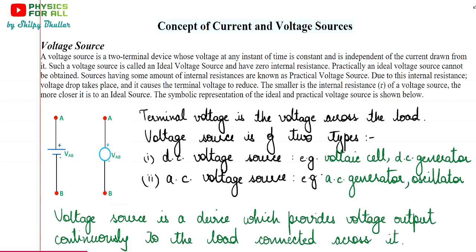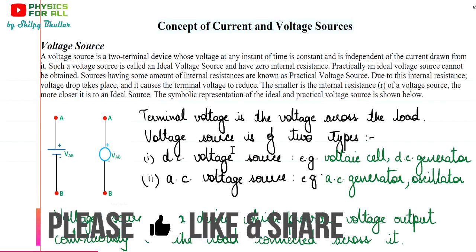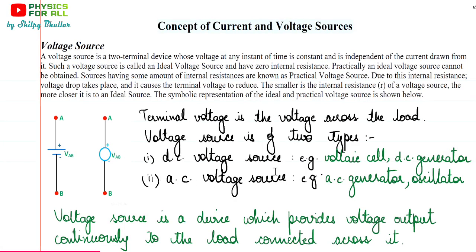We have two types of voltage source: DC voltage source and AC voltage source. DC voltage source provides direct voltage output continuously to the load connected across it, and AC voltage source provides alternating voltage output continuously to the load connected across it. Examples are voltage cell and DC generator for DC voltage source, and AC generator, oscillator, etc. for AC voltage source. In general, voltage source is a device which provides voltage output continuously to the load connected across it.